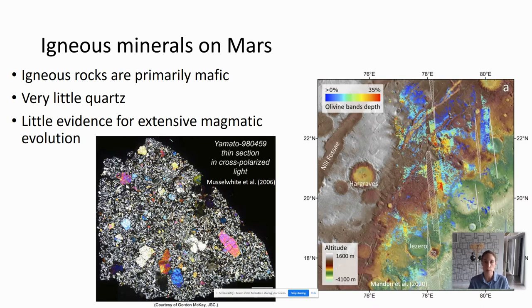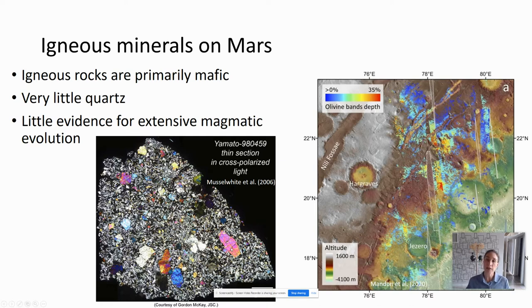Let's move on to the types of minerals we find on Mars, starting with igneous minerals. The most common are plagioclase feldspars, pyroxene, and olivine. These two images show examples of olivine detections: on the left, a thin section of Martian meteorite Yamato 980459 in cross-polarized light, where the large high-birefringence grains are olivine. On the right is a portion of Mars called Nili Fossae, in the same region as Jezero Crater, where red and yellow colors represent high concentrations of olivine from orbital infrared spectroscopy.